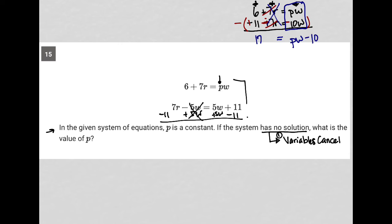But for this system to have no solution, when I cross out one variable like R, the other variable must also cross out. That's the key. Our other variable is W.